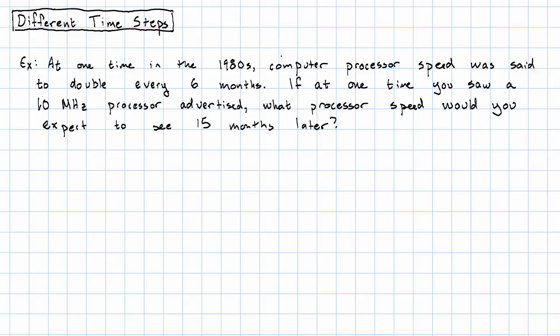So if processor speed is doubling every six months, our variables are P, processor speed. That's what's being repeatedly multiplied, so that's going to be our dependent variable. And T, time in months, that's going to be our independent variable.